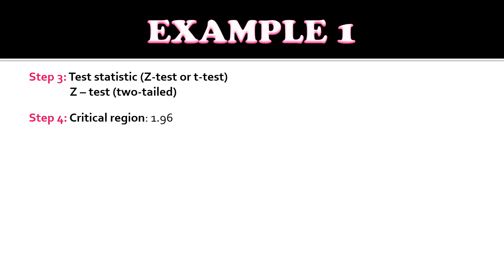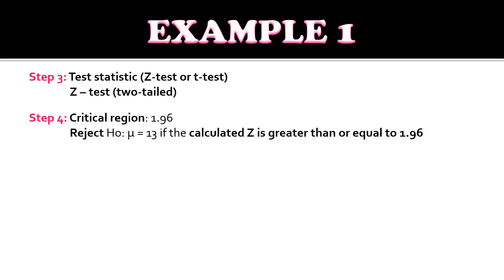For step four, we identify the critical region. With alpha equals 0.05, the critical value is 1.96 from the table. We reject the null hypothesis — mean equals 13 — if the calculated Z is greater than or equal to 1.96.